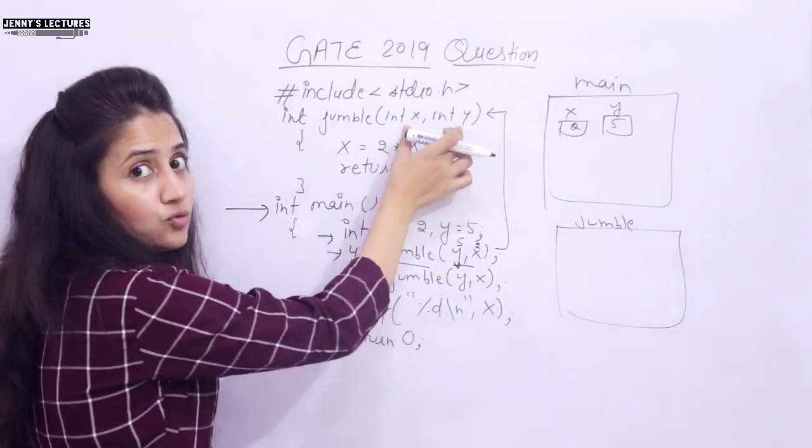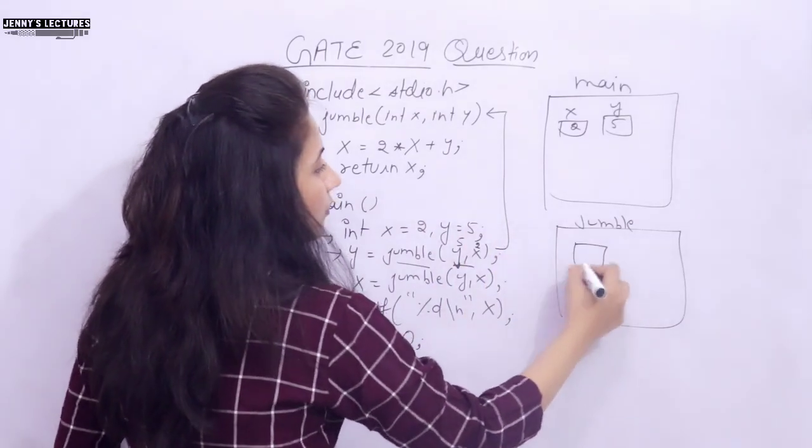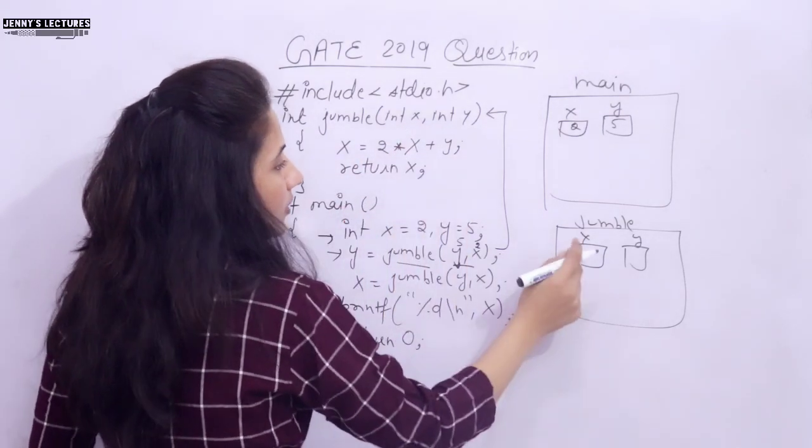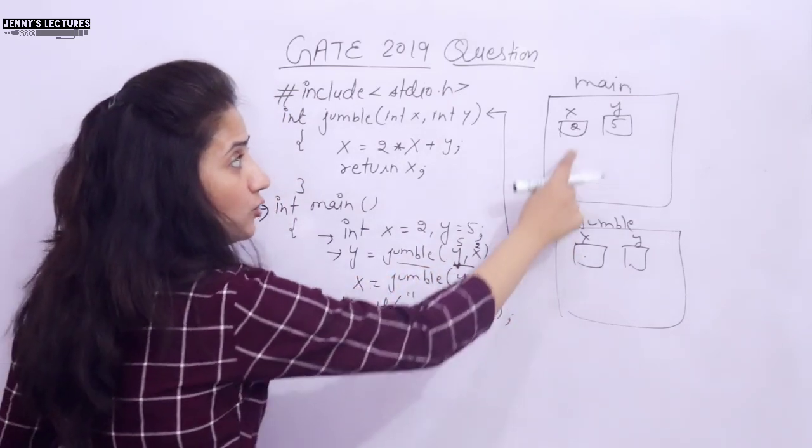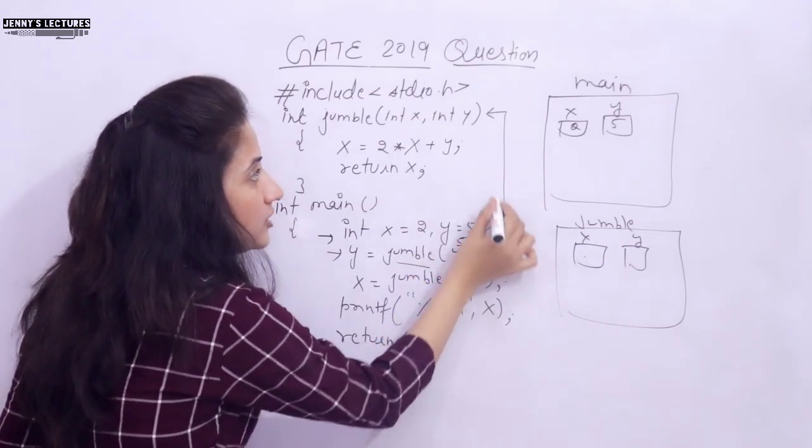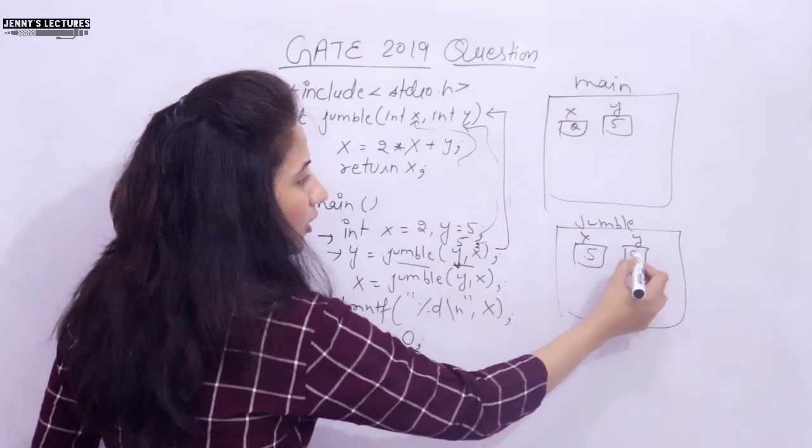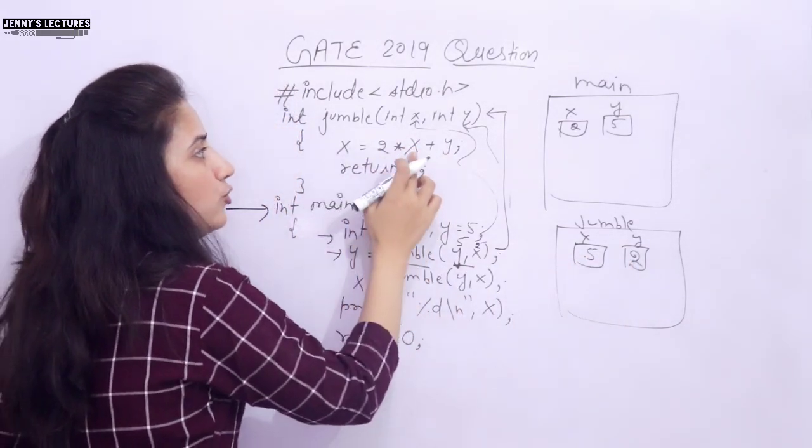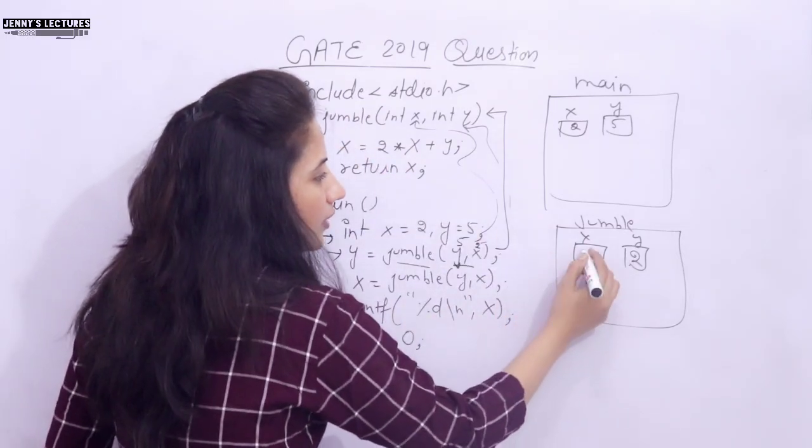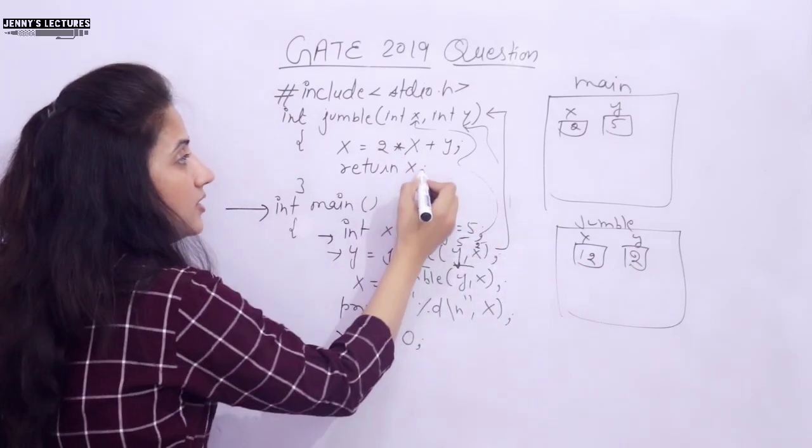Now some memory would be allocated to this jumble function. Here we have two arguments. It is function with argument and with return type, returning also something. Now here also we have x and y. See, the name of the variables are same. In main also, here also. That's fine. Now in x and y what you have? In x and y we don't have 2 and 5. Why? Because we are passing here first y, that is 5, and then 2. So now this 5 would be received by this x and this 2 would be received by this y. In x we have 5 and y we have 2 in this jumble function. Now x is equal to 2 into x plus y. So 2 into x means 5 into 10 plus 2, that is 12. So now in x we have 12.